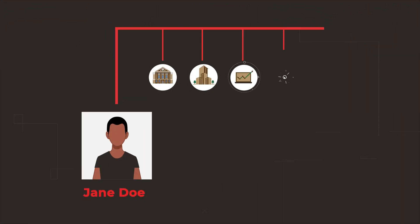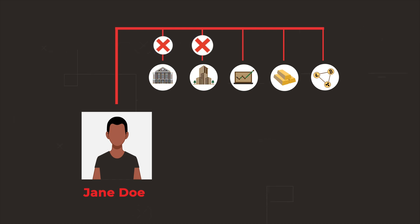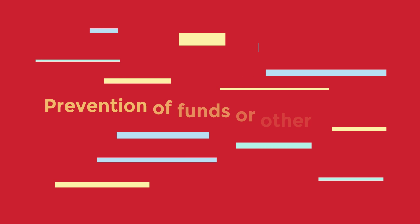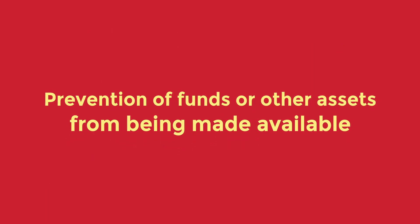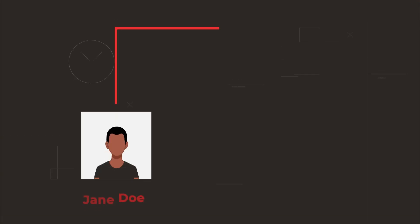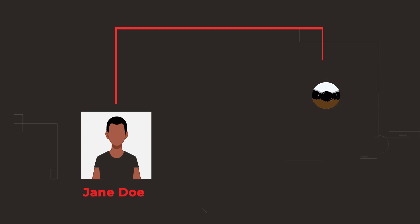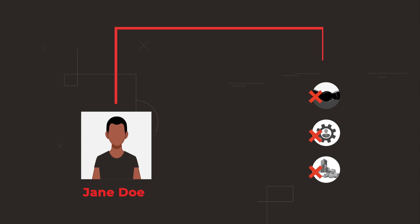You must freeze without delay any asset owned or controlled by the individual, entity, or group that is designated in the sanctions lists, or owned by a person or entity acting on behalf of the designated individual, entity, or group. You must also ensure that all goods, assets, or services to the designated individual, entity, or group, or anyone acting on their behalf, are prohibited.